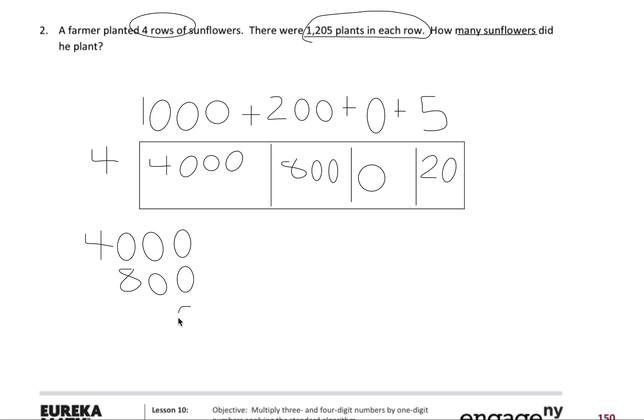Eight hundred, zero, and then my twenty. Okay, so I know zero plus zero plus zero is zero. Zero plus zero plus nothing plus two is going to give me two. Zero plus eight is eight, and four plus nothing is four. There we go, so I have four thousand eight hundred and twenty.